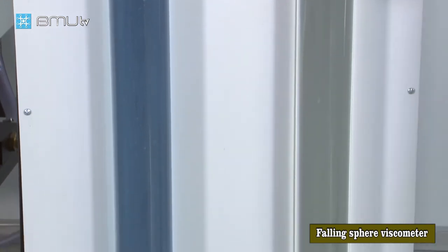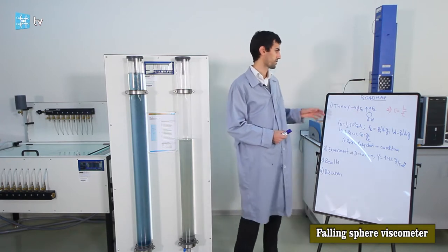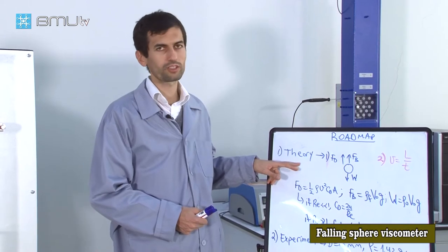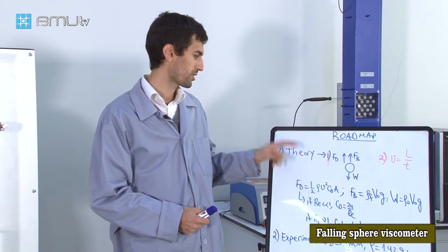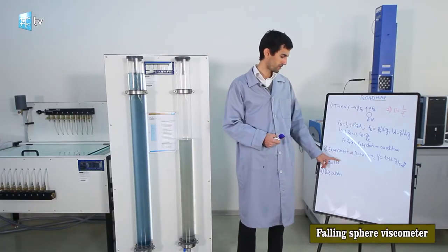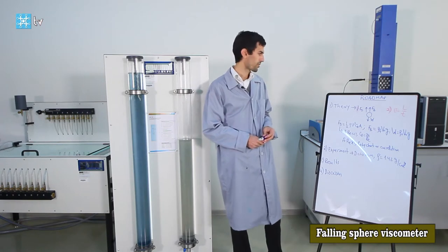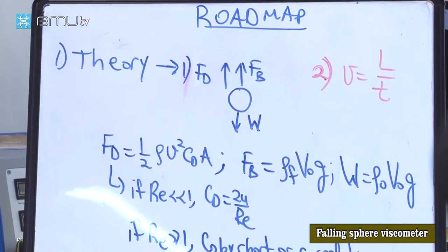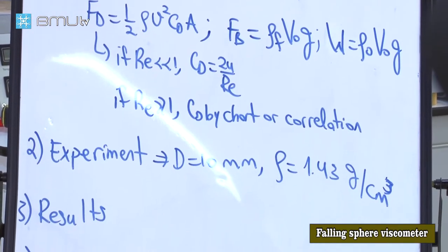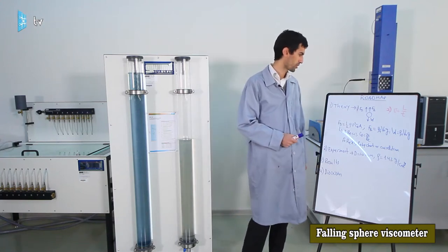We are going to measure the viscosity of these two fluids and then compare the values with the theoretical values. Here is the roadmap: we will first talk about the theory of the experiment, then do the experiment itself, then compare the results with the theory, and finally move on to the discussion part — covering why we have errors, the reasons for those errors, and so on.